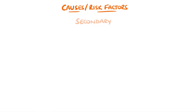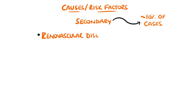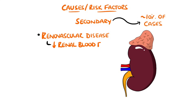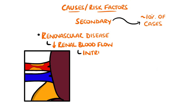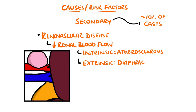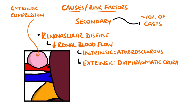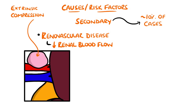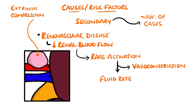Secondary hypertension accounts for around 10% of cases and can be caused by renal vascular disease, which is essentially a reduced blood flow to the kidney. This could be atherosclerosis within the vessel all the way up to an extrinsic compression of the vessel. The reduction in blood flow to the kidney causes the kidney to sense that the body is volume depleted, and therefore it produces renin and sets off the renin-angiotensin-aldosterone system, leading to fluid retention and vasoconstriction, both of which contribute to hypertension.